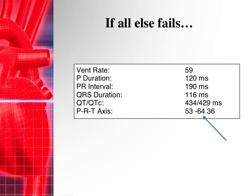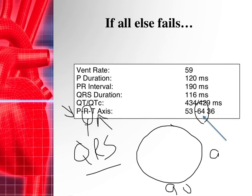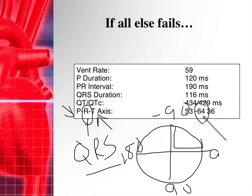If all else fails — if the quadrant method or the original hex axial method doesn't work for you — you can always look at the EKG axis printout directly. These are pretty accurate. The middle value is the QRS axis; 'R' refers to the QRS complex. You'll notice there's also a P axis and a T axis, but we're not focusing on those right now. In this example, the QRS axis reads negative 64 degrees, which is left axis deviation — anything between negative 30 and negative 90 fits that category.